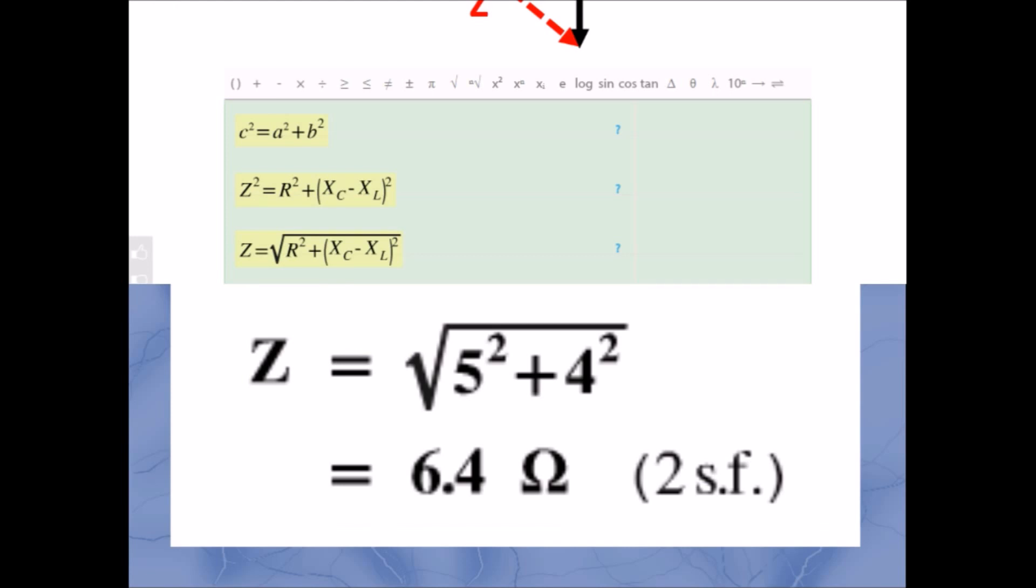And the answer comes out as 6.4. Impedance is still measured in ohms, so that is 6.4 ohms for this particular LCR circuit. Good show.